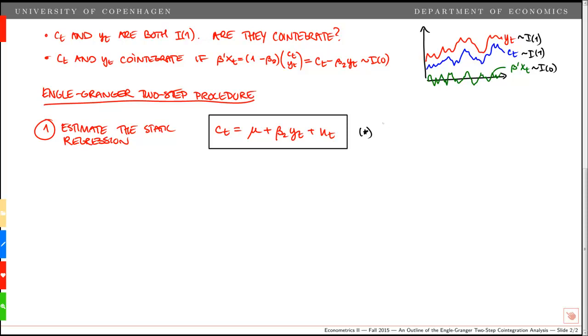Note that if the variables cointegrate, the OLS estimator beta 2 hat is super consistent. The variance of the estimator beta 2 hat collapses at a rate of t to the power of minus 2 rather than minus 1. So we have a lot faster convergence of the estimator to the true parameter. Note that this is the case even if the dynamic terms have been neglected, so that this model is misspecified compared to the actual data generating process. However, the estimator is not asymptotically normal in general. This implies that we can use star for estimation, but we should not use it for testing.